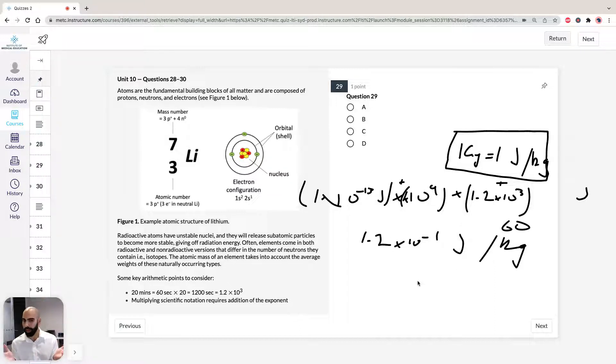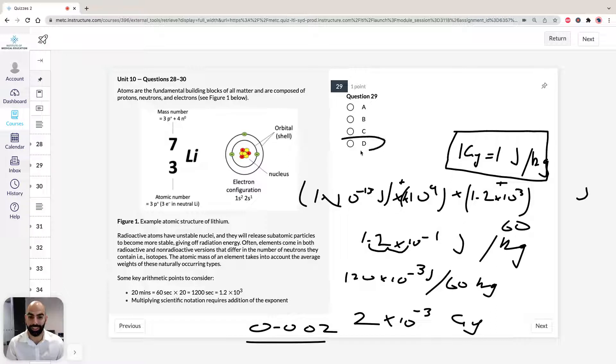So we have to do 1.2 by 10 to the minus 1 divided by 60. But how do we do this easily? We have to convert it to a number that we're easy to work with. So let's convert this to 120. So if we do that, it's going to be 120 by 10 to the power of minus, so think about it, 1, 2. So we're going to add a 0 up here, so to the power of minus 3. So we're going to do that divided by 60 kilograms. So 120 divided by 60 is going to be 2 by 10 to the minus 3. Great. So Gy. So that's our answer. So the answer is therefore going to be 0.002 Gy. So that's why the answer for 29 is D.